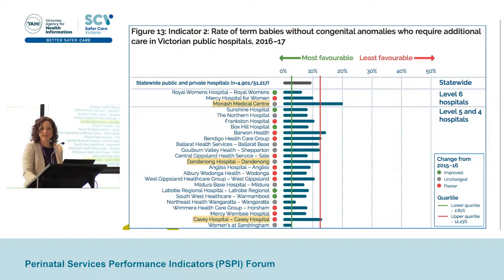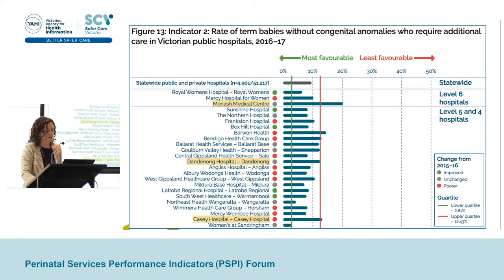Our story begins with our need to improve our performance against indicator two. We have three units within Monash Health, and Monash Medical Centre at Clayton in particular is an outlier relative to the other level six units in the admission of term babies for additional care. Dandenong and Casey are the other two units lying on the upper quartile. This is the 2016-2017 data.